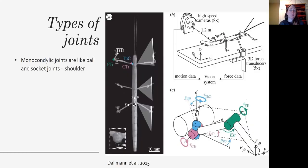There are multiple types of joints in insect legs. Monocondylic joints are more like the ball and socket joints that you might have at your shoulder or in your hip. And then there are dicondylic joints that are more like hinges, like at your knee, that they only move in one direction.